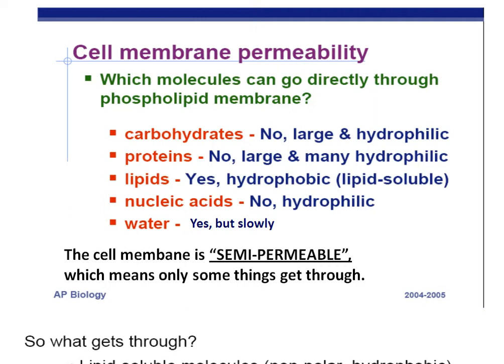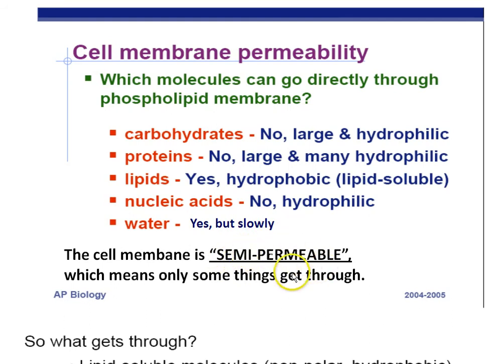Permeability means allowing stuff through. We can describe the cell membrane as semi-permeable — the prefix semi means half or partial, and permeable means allowing stuff through. Some things can get through, some things can't, and you should know what things can and can't get through.